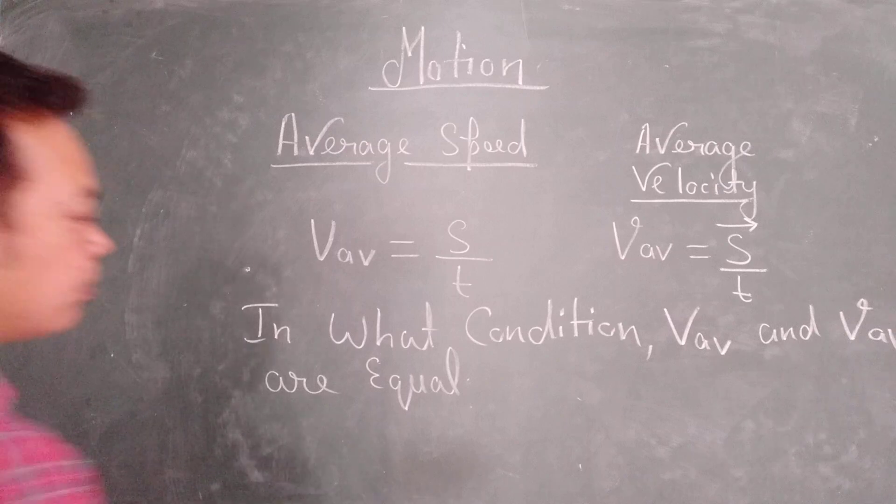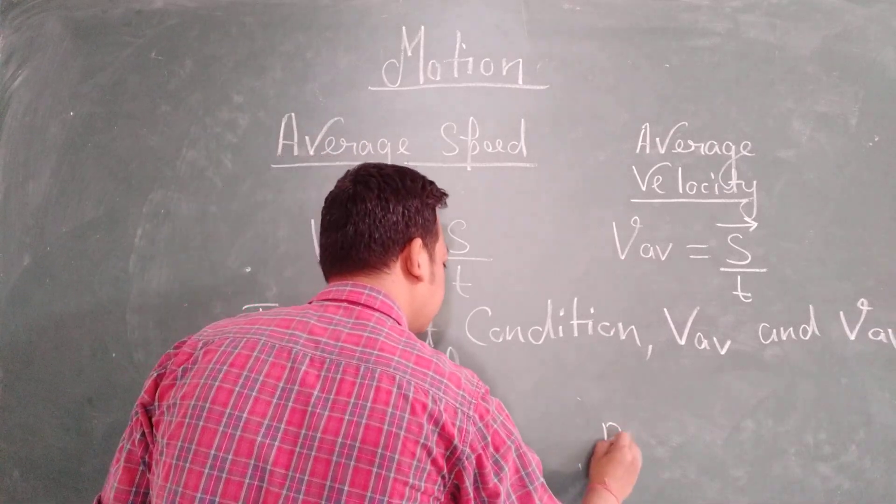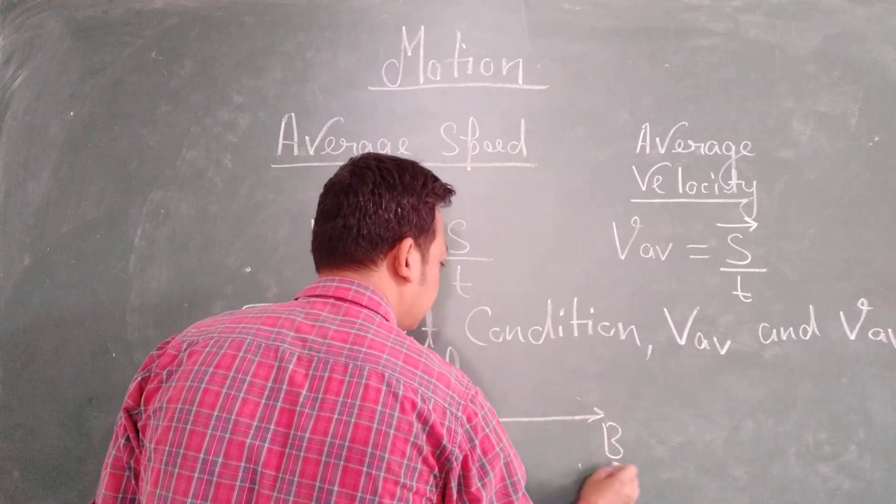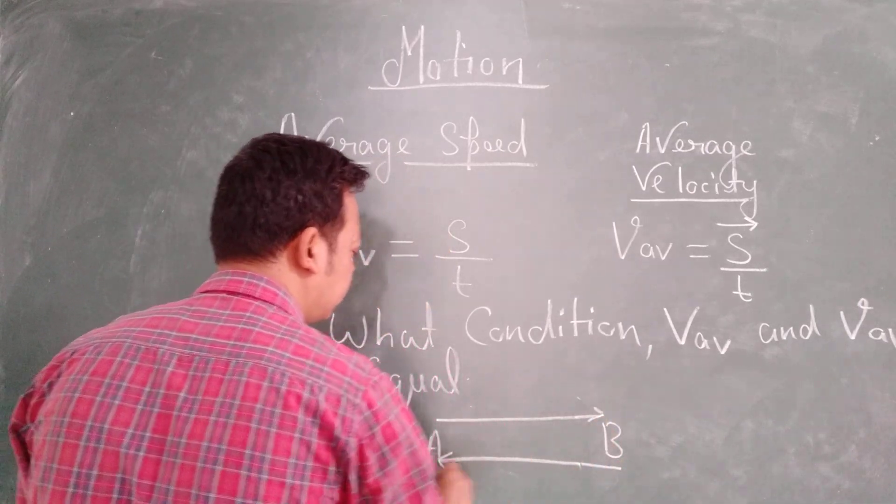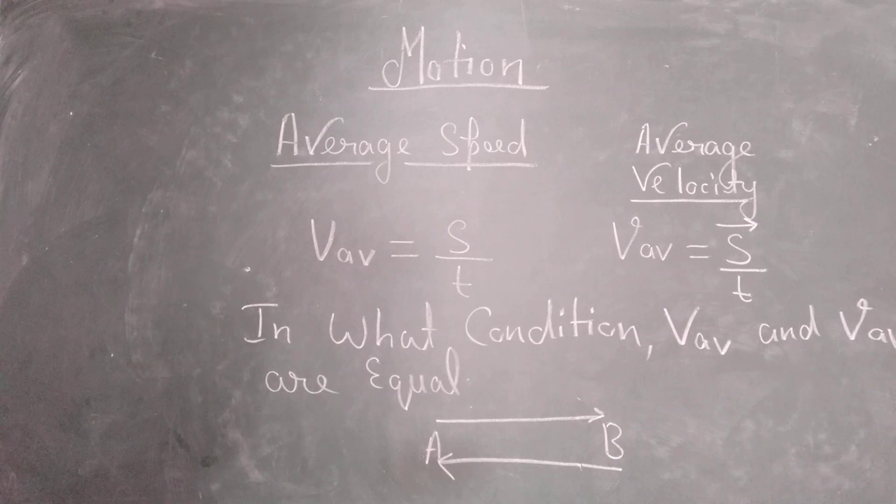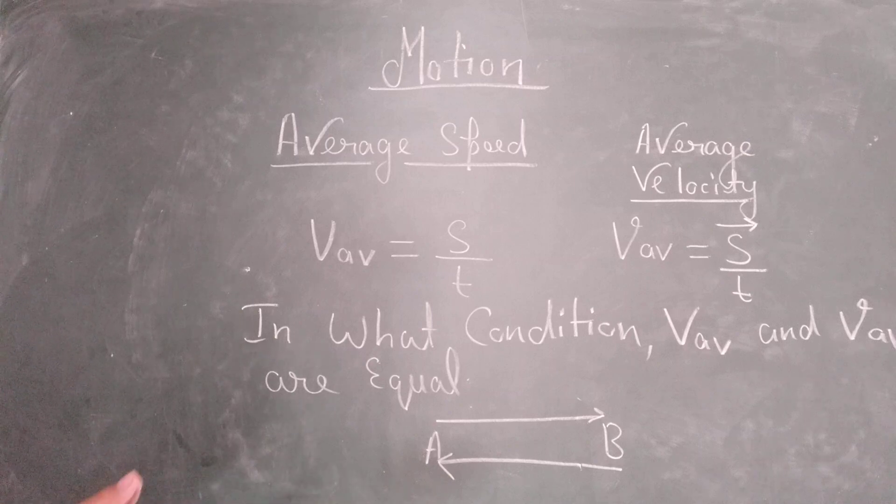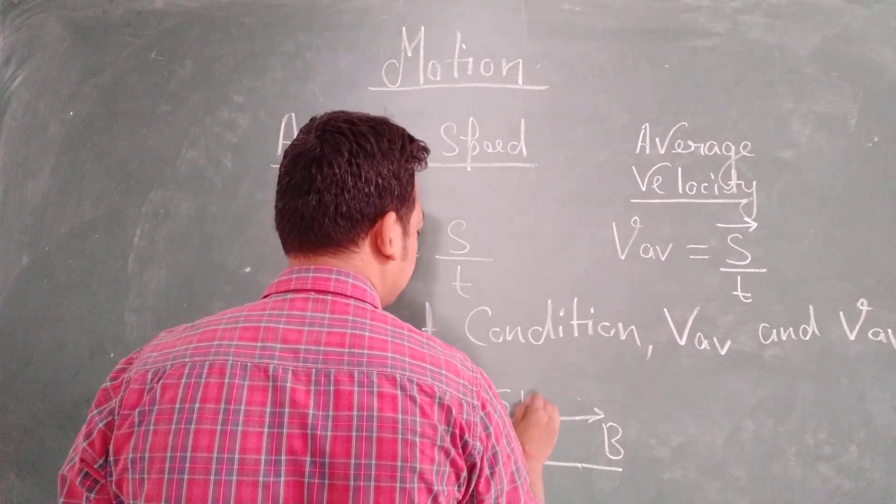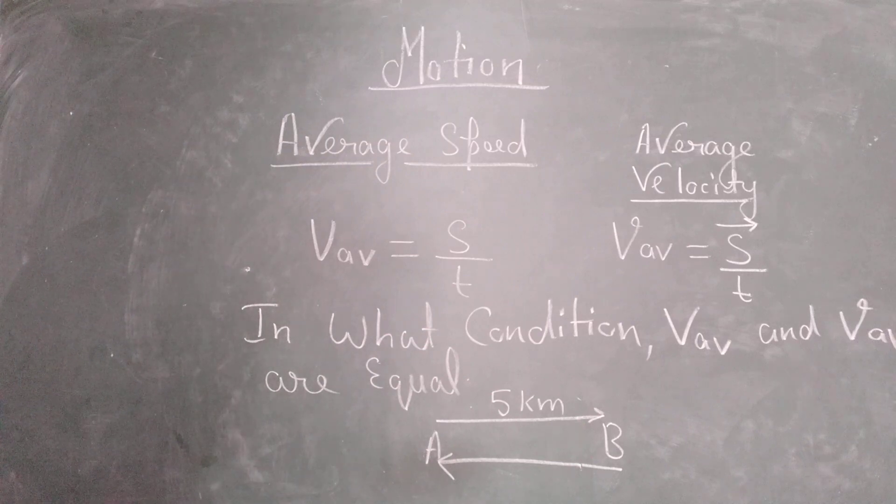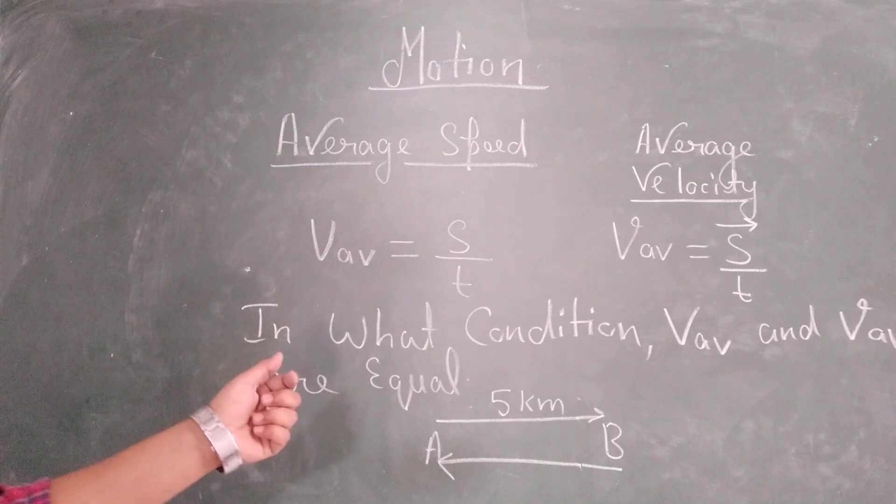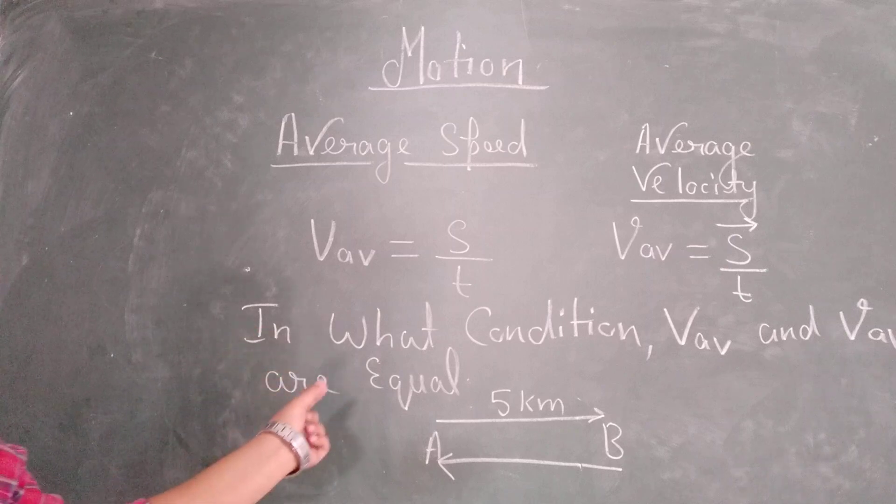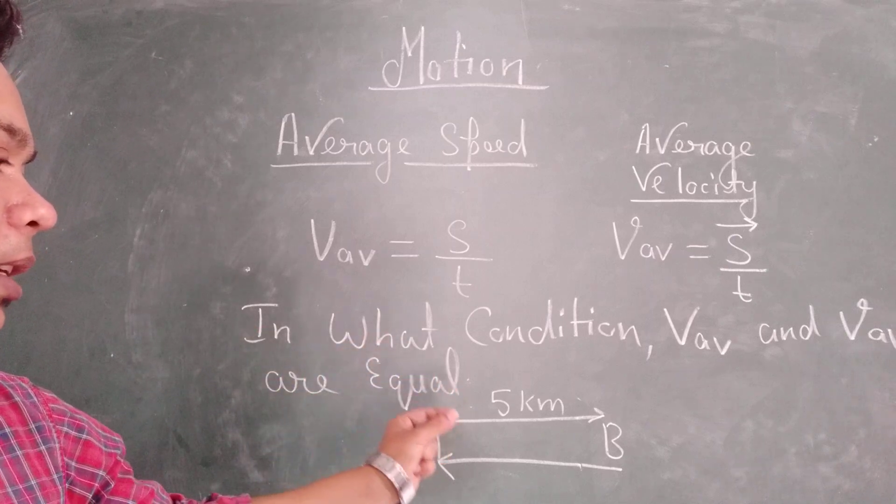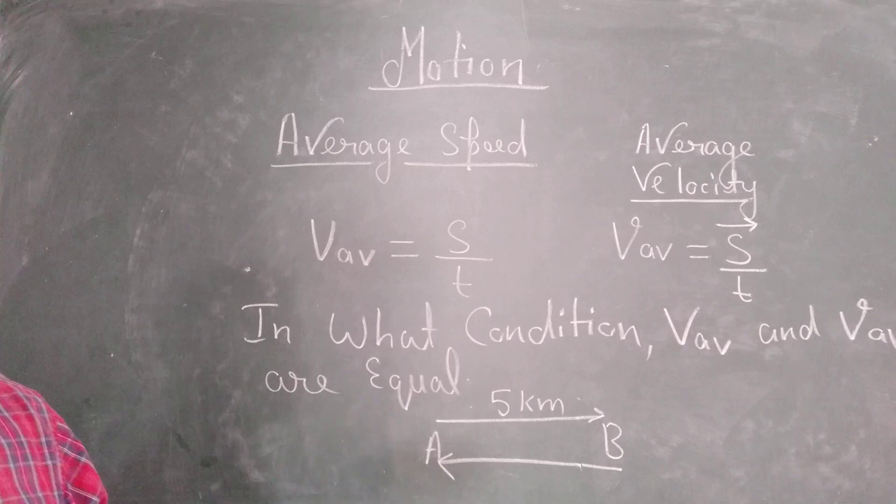For example, a boy starts moving from A and reaches to B, and once again from B to A he comes back. Now let us consider that the distance between A and B was 5 km. It can be easily understood that if the distance between A and B is 5 km, then the distance between B and A will also be 5 km.